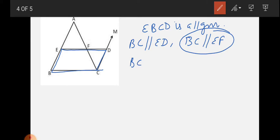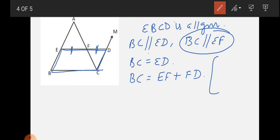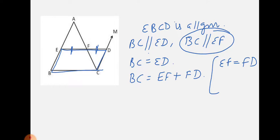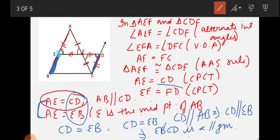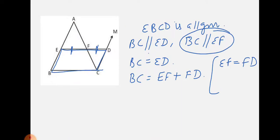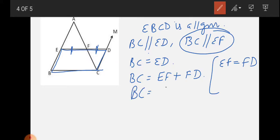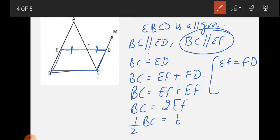Also, BC equals ED, and ED can be written as EF plus FD. Since we have already proved that EF equals FD, substituting gives BC equals 2 times EF, so EF equals half of BC.